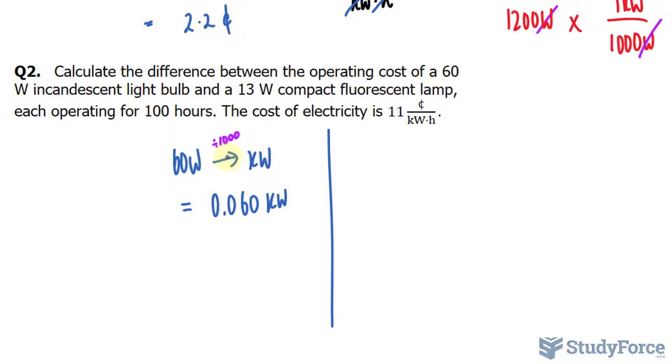And the same thing can be done for the other light bulb. So I have 13 watts, and dividing that by 1,000 gives us a value of 0.013 kilowatts.